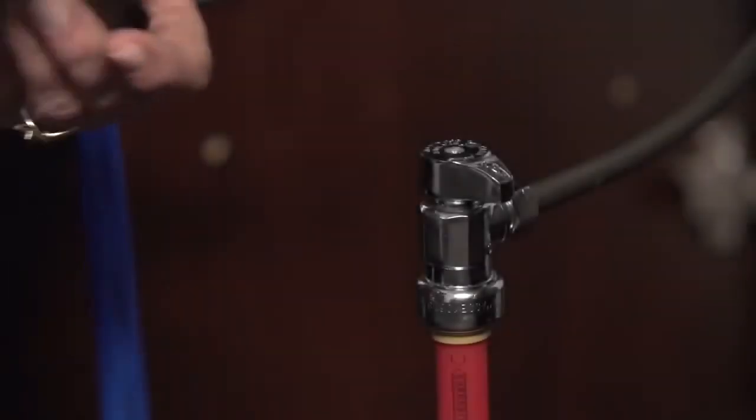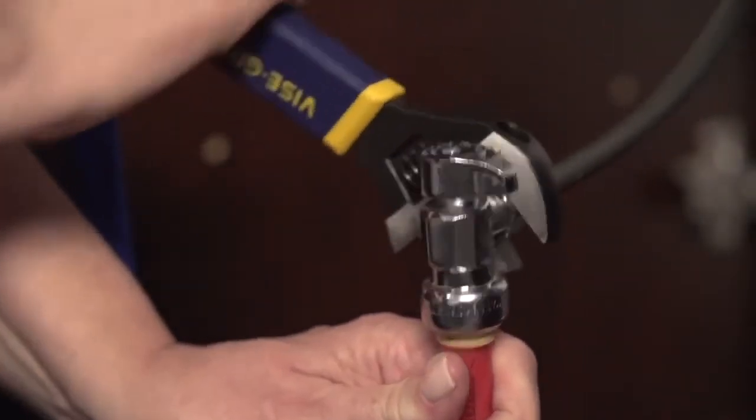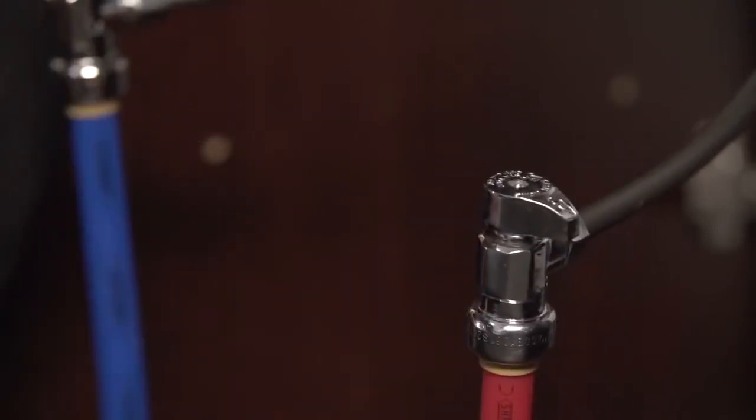Next, attach the hot water line to the hot supply line and repeat the previous step. If you have custom fit supply tubes, you'll want to refer to the installation guide.